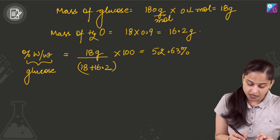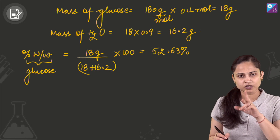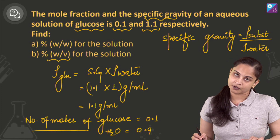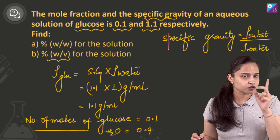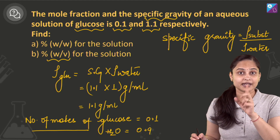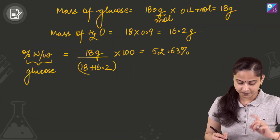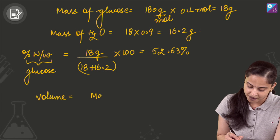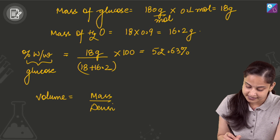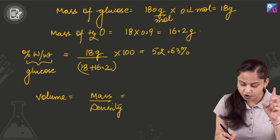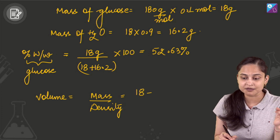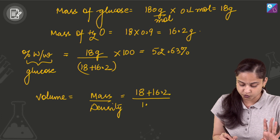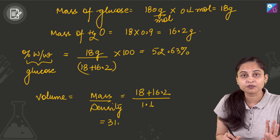Now we know the density of glucose solution. Can we find the volume? We need this to calculate percentage weight by volume, which is the amount of solute in grams present per 100 ml of solution. Volume equals mass upon density. The mass of the solution is 18 + 16.2, and the density is 1.1, so the volume comes out to be 31.09 ml.